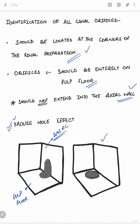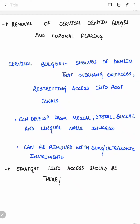The next step is removal of cervical dentine bulges and coronal flaring. Similar to the lingual shoulder in anterior teeth, cervical bulges are shelves of dentine that overhang the orifices, restricting access into the root canals. They can develop from mesial, distal, buccal, or lingual walls inward, and can be removed with burs or ultrasonic instruments to achieve straight-line access.